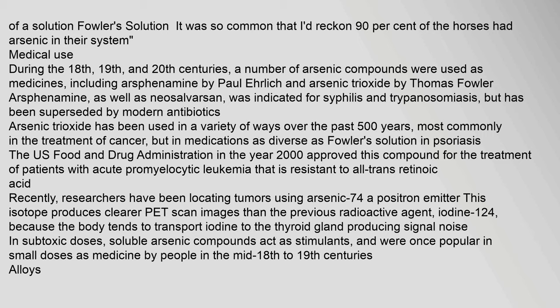During the 18th, 19th, and 20th centuries, a number of arsenic compounds were used as medicines, including arsphenamine by Paul Ehrlich and arsenic trioxide by Thomas Fowler. Arsphenamine and neosalvarsan were indicated for syphilis and trypanosomiasis, but have been superseded by modern antibiotics. Arsenic trioxide has been used over the past 500 years, most commonly in cancer treatment and in Fowler's solution for psoriasis. The US FDA in 2000 approved this compound for treatment of patients with acute promyelocytic leukemia resistant to all-trans-retinoic acid. Researchers have been locating tumors using arsenic-74, a positron emitter, which produces clearer PET scan images than iodine-124.